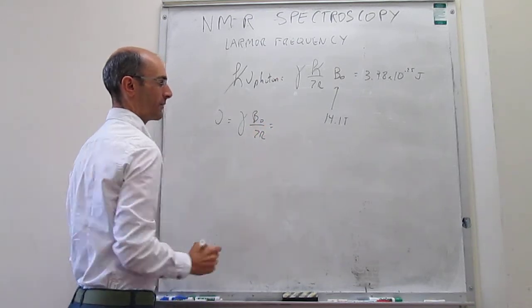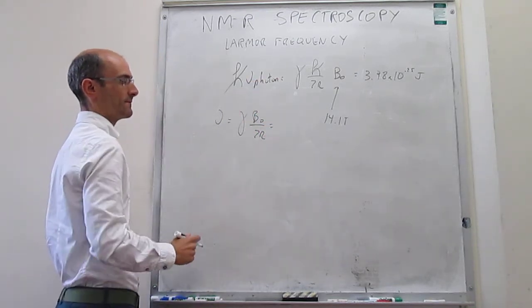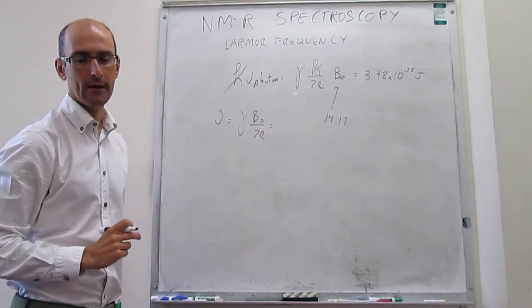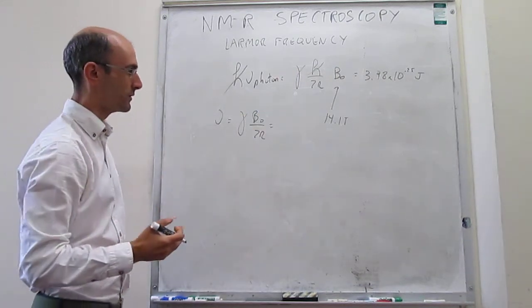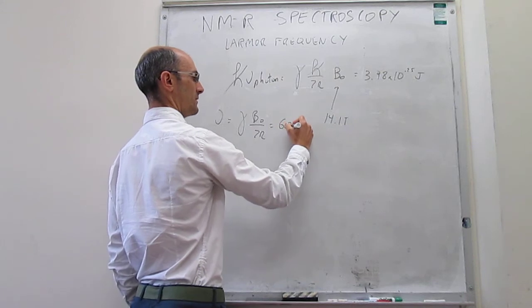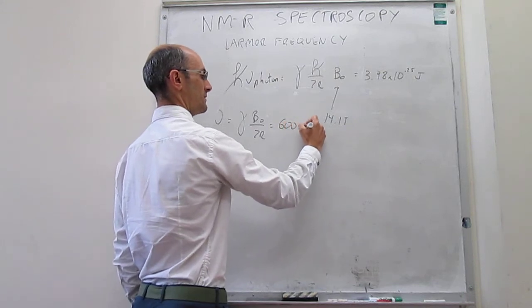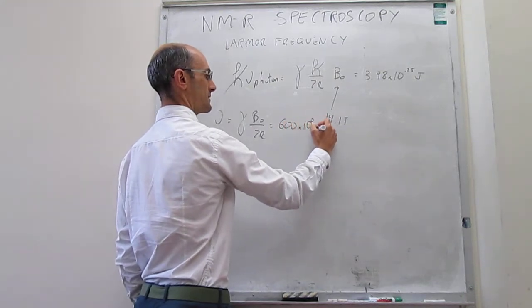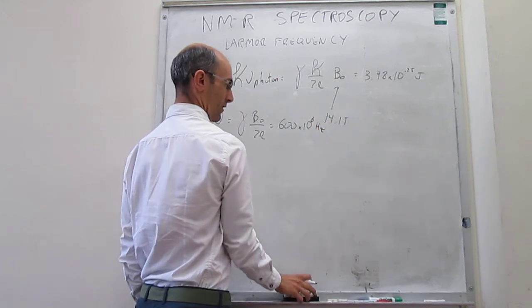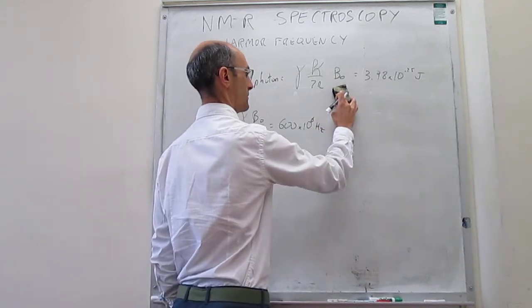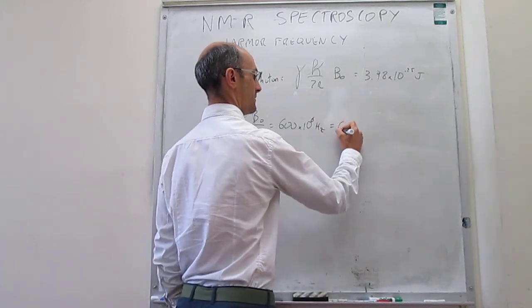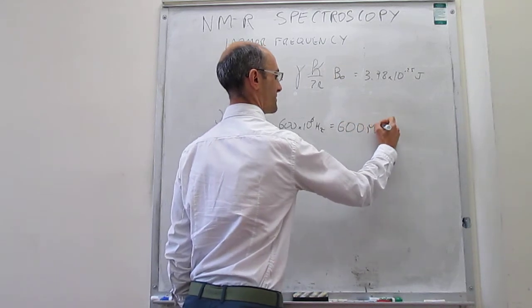When you carry out that calculation for this particular system — same 14.1 tesla external magnetic field and the same proton — this turns out to be 6 × 10⁸ hertz, or in other words, 600 megahertz.